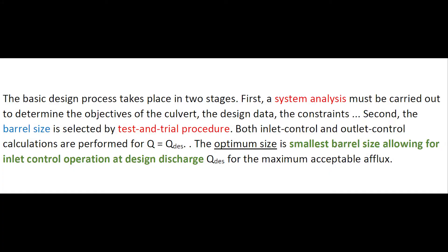The basic design process takes place in two stages: first, a system analysis, and then the calculation of the barrel size by a test and trial procedure. Inlet control and outlet control calculations are performed for the design discharge, and the optimum size is the smallest barrel size allowing for inlet control operations at the design discharge for the maximum acceptable flux.